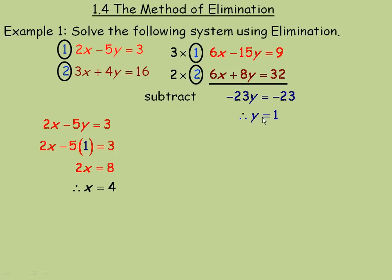So we think we have a solution now, we will check to make sure. So in the first equation, the left side is 2x minus 5y. So substituting the 4 here, and the 1 here, we have 8 minus 5, which of course is 3. And that's what's on the right side, so that equals the right side, so it checks in the first equation.